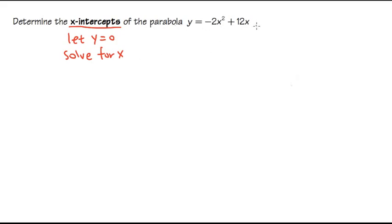So as we can see, this is the equation that we have, so we're just going to plug in 0 into the y, and then this is the equation that we have to solve. 0 is equal to negative 2x squared plus 12x.